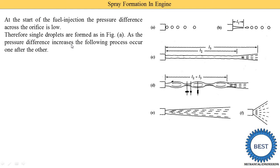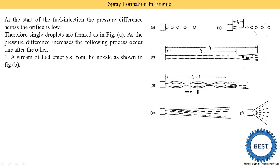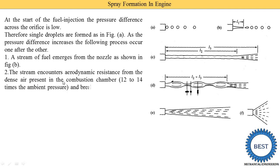As the pressure difference increases, the flow process occurs one after another. The pressure difference increases because diesel is coming with more pressure or pressure inside the engine increases. When combustion starts, pressure suddenly increases; then expansion starts and pressure begins to reduce. The pressure difference continuously changes and gradually increases. A stream of fuel emerges from the nozzle as shown in figure B, and the droplet shape changes, becoming more elongated. The stream encounters aerodynamic resistance from the dense air present in the combustion chamber — 12 to 14 times ambient pressure — and breaks into a spray.